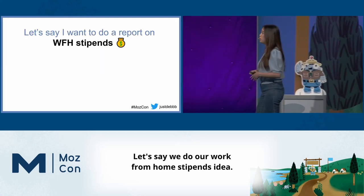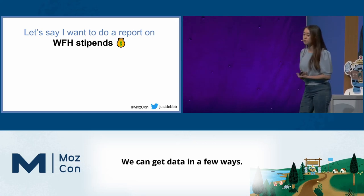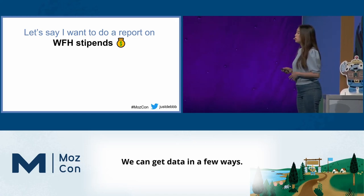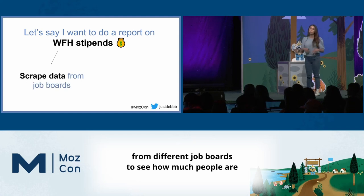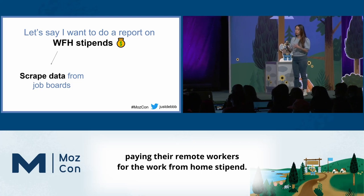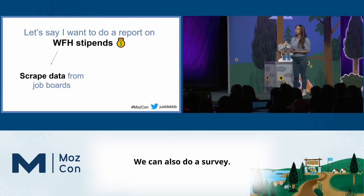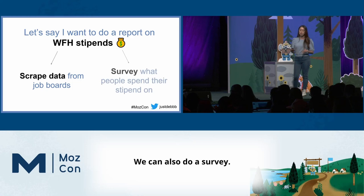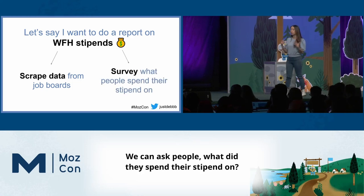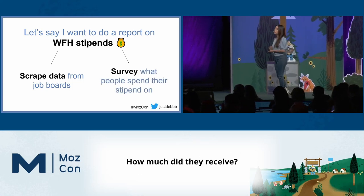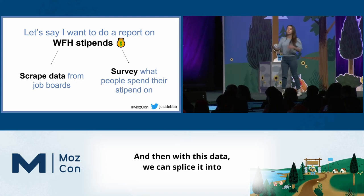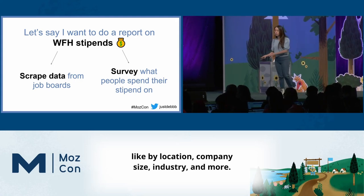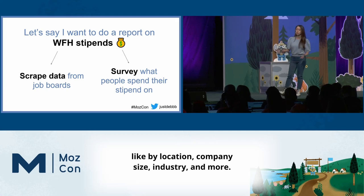Let's say we do the work from home stipends idea. We can get data in two ways. First, we can scrape data from different job boards to see how much people are paying their remote workers for the work from home stipend. We can also do a survey — asking people what they spent their stipend on, how much they received, and whether or not that was enough. And then with this data, we can splice it by location, company size, industry, and more.